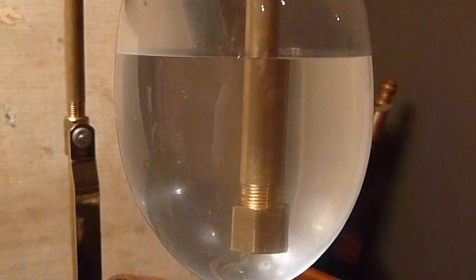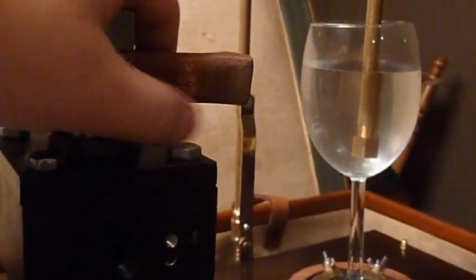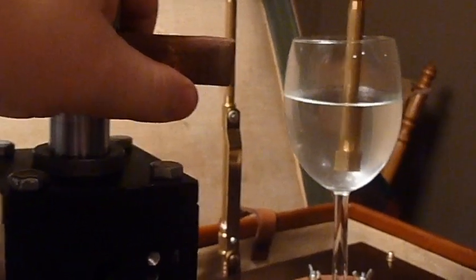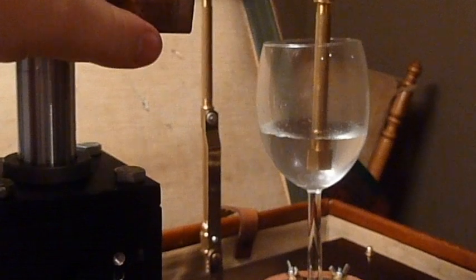In the wine glass is a pipe, which leads through some tubing to a pneumatic cylinder. So that when you move the pneumatic cylinder up and down, the level of water in the wine glass moves up and down.